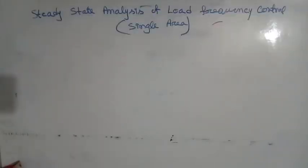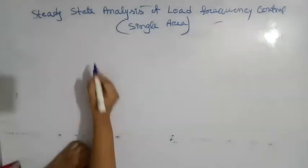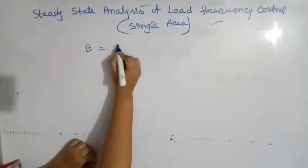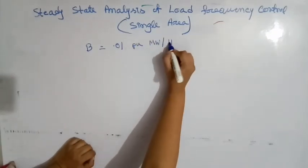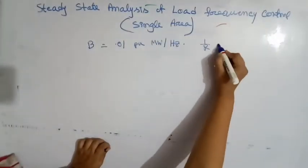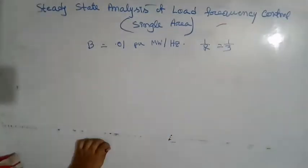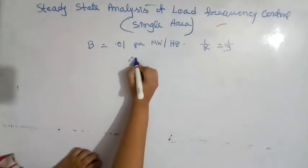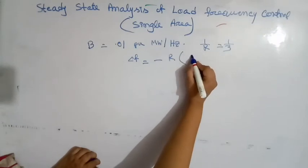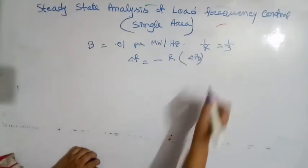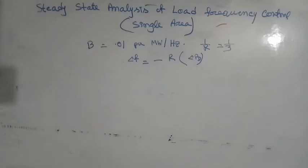Power system parameter B is generally much smaller than 1/R. The typical value of B is 0.01 per unit megawatt per hertz, and 1/R equals 1/3, so B can be neglected. Therefore, delta f approximately equals minus R into delta PD. The droop of the load frequency curve is thus mainly determined by R, the speed governor regulation.